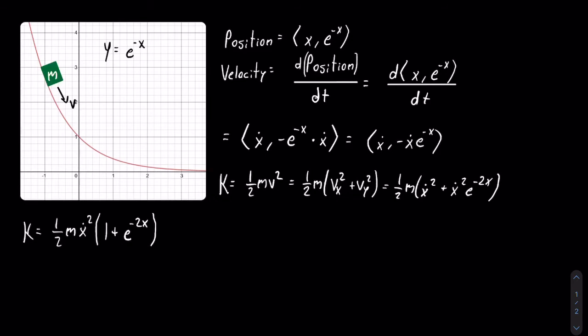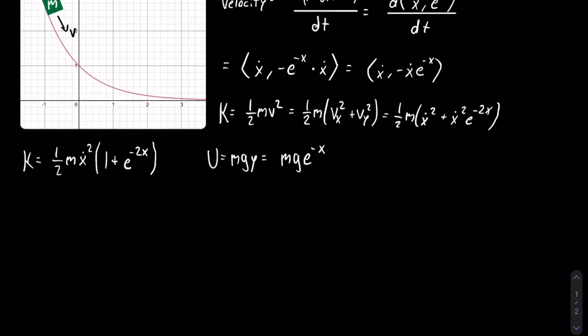Now we can move on to the potential energy, which is a lot easier. In this case, there is only gravitational potential energy, which is only dependent on the mass and the y coordinate. This gives us U equals mgy. But since we have everything in terms of x, I can change that to U equals mg times e to the power of negative x. We have our kinetic energy and our potential energy, so we can now form our Lagrangian.